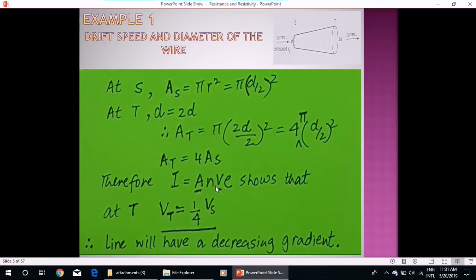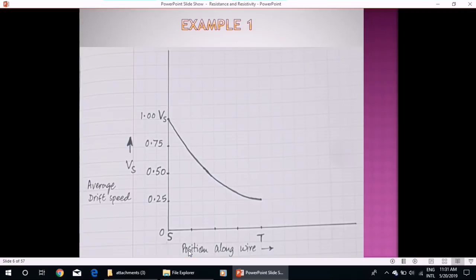In this expression we can see that if we increase area by 4, the drift speed will decrease by one-fourth. We will study the curve in the next slide and we will see that the line will have a decreasing gradient.